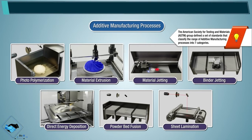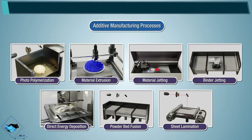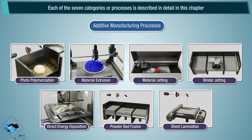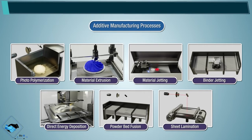The American Society for Testing and Materials group defined a set of standards that classify the range of additive manufacturing processes into seven categories. Each of the seven categories or processes is described in detail in this chapter.